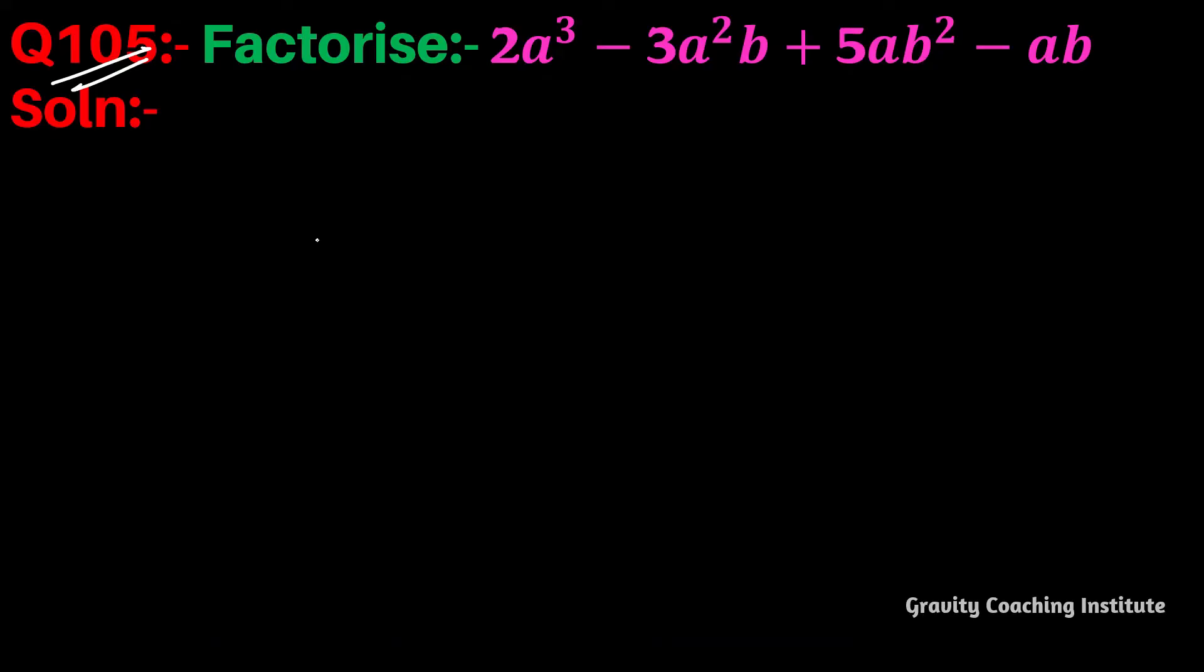Question number 105: Factorize 2a³ - 3a²b + 5ab² - ab. If we try grouping, the pairs formed won't be identical.